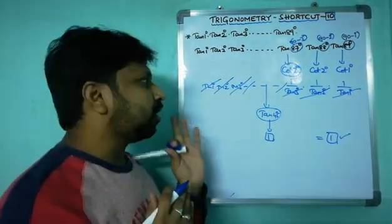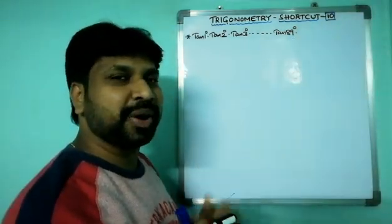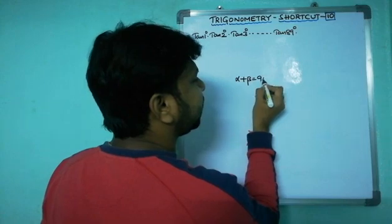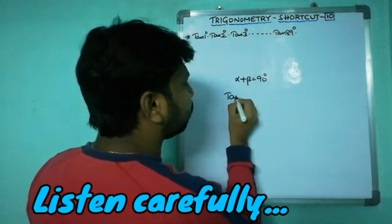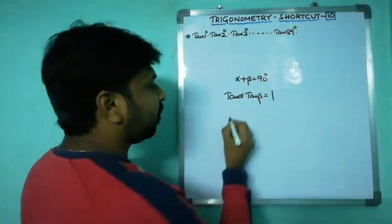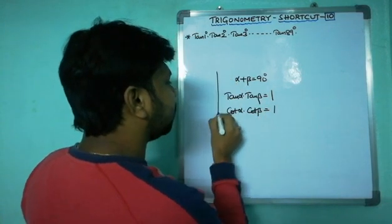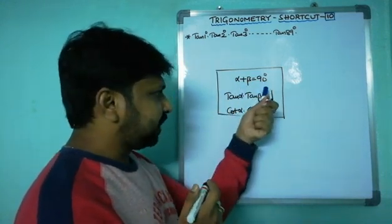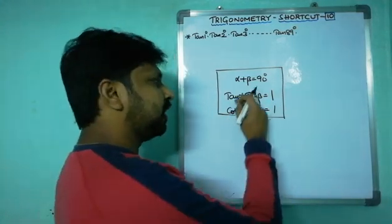That is the formal and regular method, but I'm not going to follow that method. I want to do it another way — what is the logic, what is the secret? The secret is: whenever α + β = 90°, we can write tan α × tan β = 1, and also cot α × cot β = 1. This is the key insight.